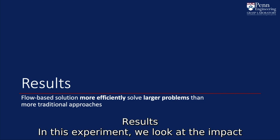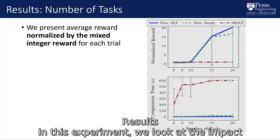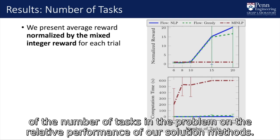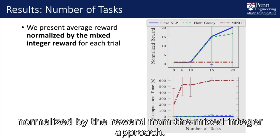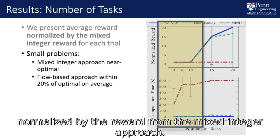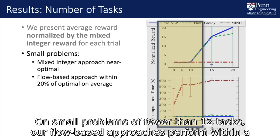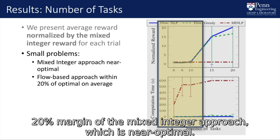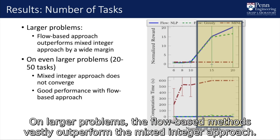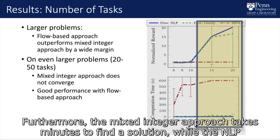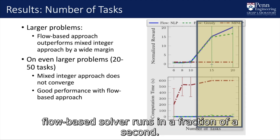Our results show that flow-based solutions more efficiently solve larger problems than more traditional approaches. In this experiment, we look at the impact of the number of tasks on the relative performance of our solution methods. Across many random trials, we present the average reward for the flow-based method normalized by the reward from the mixed integer approach. On small problems of fewer than 12 tasks, our flow-based approaches perform within a 20% margin of the mixed integer approach, which is near optimal. On larger problems, the flow-based methods vastly outperform the mixed integer approach. Furthermore, the mixed integer approach takes minutes to find a solution, while the NLP flow-based solver runs in fractions of a second.